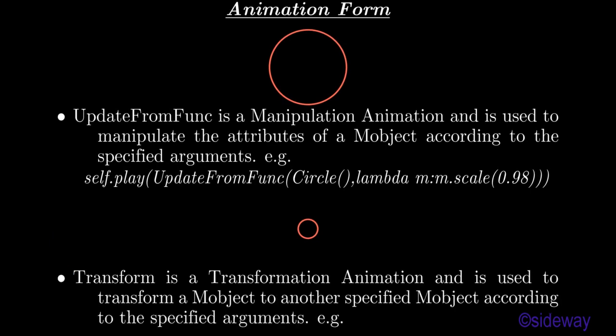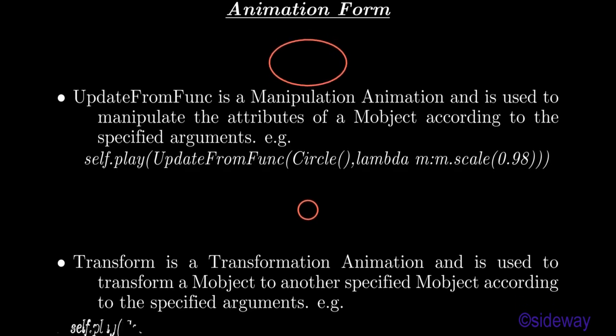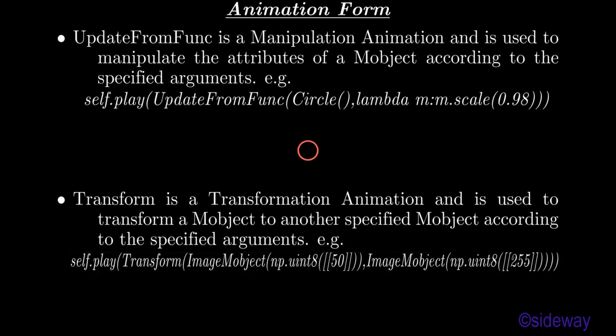Transform is a transformation animation used to transform a Mobject to another specified object according to the specified arguments. For example: self.play(Transform(ImageMobject(np.uint8(50)), ImageMobject(np.uint8(255)))).